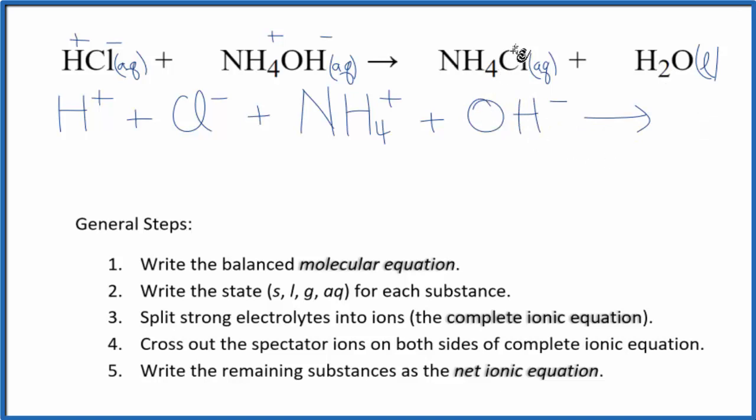In the products we have the ammonium ion one plus and the chloride ion, so we'll have NH4 plus plus that chloride ion Cl minus. And then in net ionic equations we don't split liquids apart, so we're not going to split the water apart, that's just H2O. Now we can cross out spectator ions, they're on both sides of the complete ionic equation.